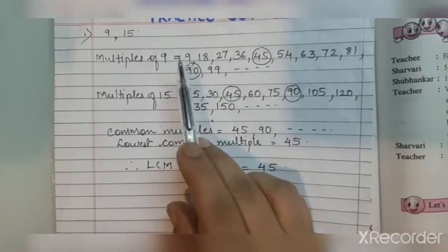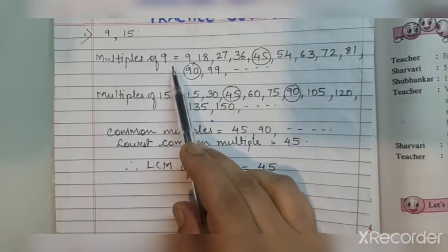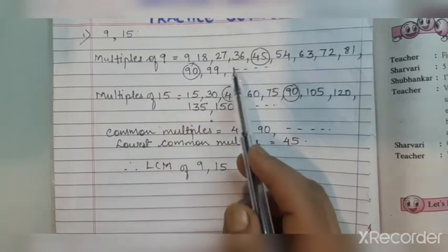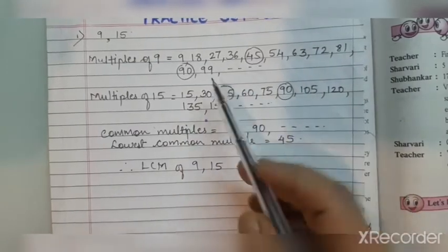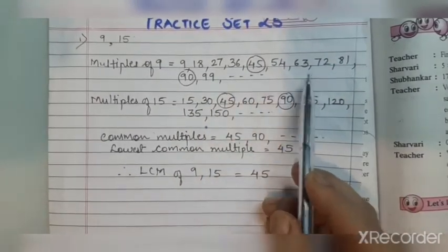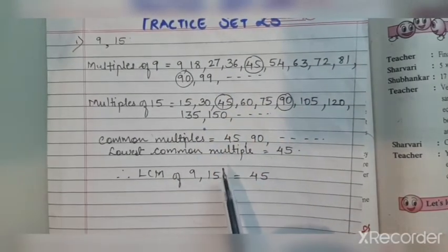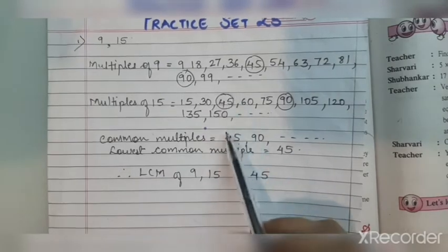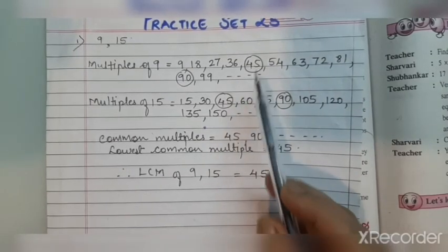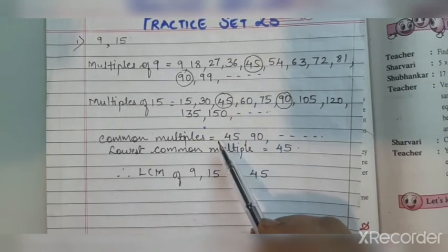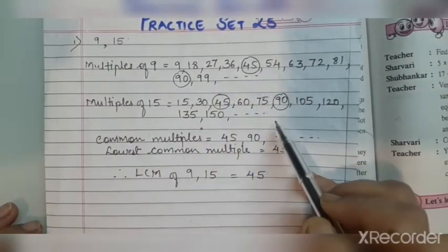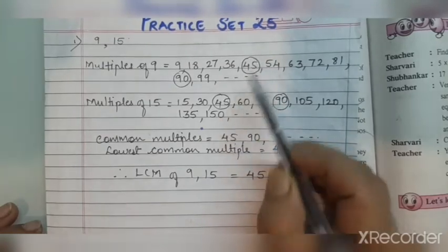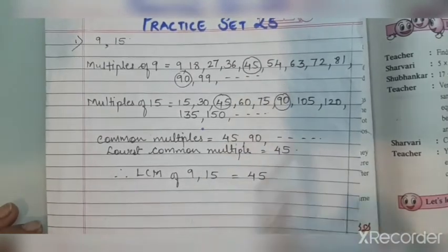So that is the method of solving by listing the multiples — we write the multiples of the given numbers. The meaning of multiples is writing the tables: 1's are, 2's are, 3's are, and so on. From the list we find what is common and the lowest common. Once you get the first common multiple, you can stop writing.